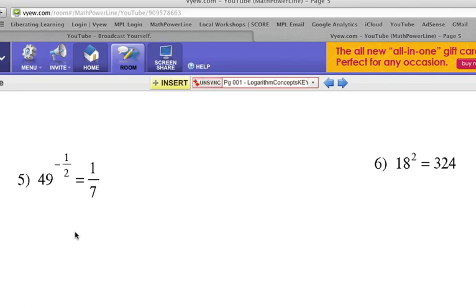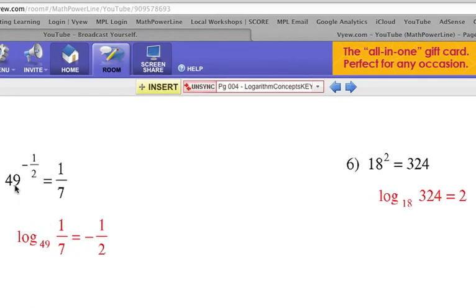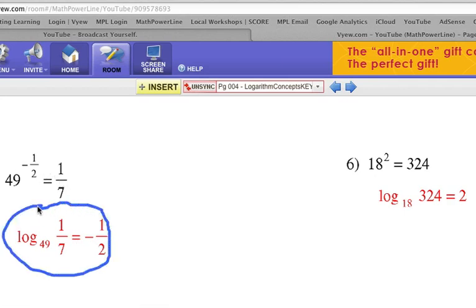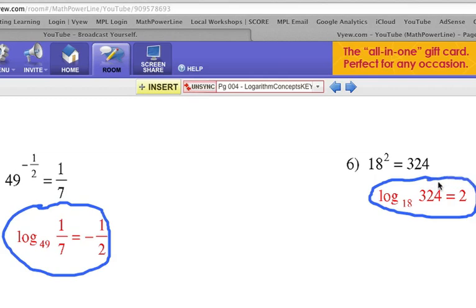Number 5. Again, where's the base? 49. So we're going to write log base 49, and the answer is 1/7, so that goes right there, equals the exponent. Base, answer, exponent. Don't let the fractions fool you. But again, this says 49 to the what power is 1/7? And the answer is to the negative 1/2 power. I know it's a little confusing with the fractions, but just remember the format and where everything goes. Here it's 18 squared equals 324. The base number is 18. So 18 to the what power is 324? 2. Remember, the logarithm is the exponent. If you can think backwards like that and put the numbers in the proper spot, you've got it. Now the next video is to go from log form to exponential form. We'll see if we can do it.